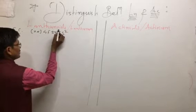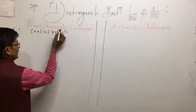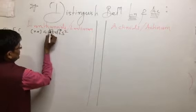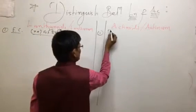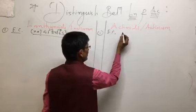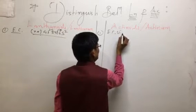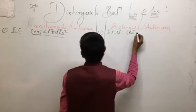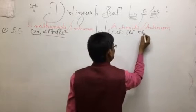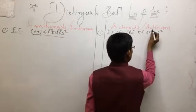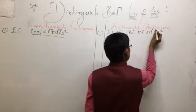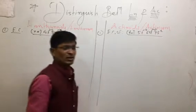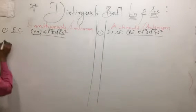The electronic configuration (EC) of the lanthanoid series involves the 4f subshell, ranging from 4f1 to 4f14. For the actinoid series, the EC involves the 5f subshell, with 6d ranging from 0 to 1, and 5f ranging from 1 to 14. These are the electronic configurations of both the lanthanoid and actinoid series.